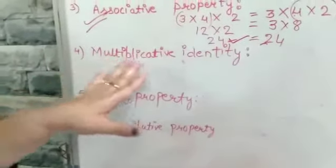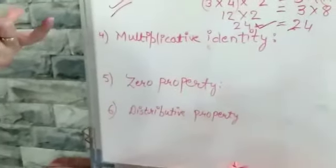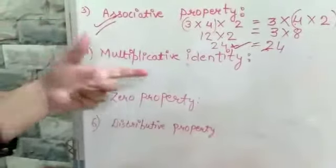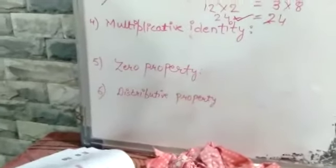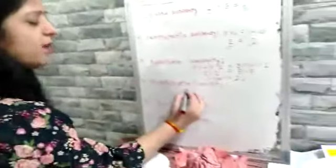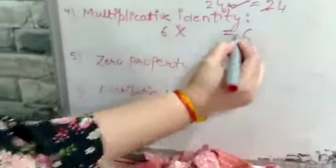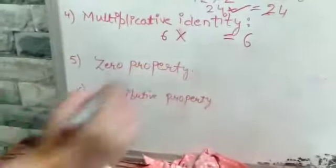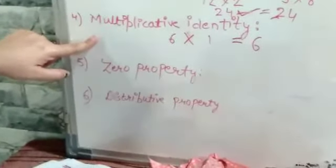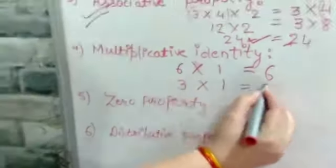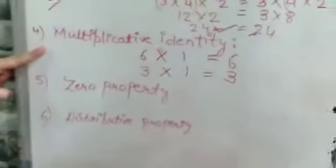The next property is multiplicative identity. In addition, we had additive identity, and in subtraction it was subtractive identity, but in multiplication it becomes multiplicative identity. Remember, in addition the identity element was 0 — additive identity was 0 and subtractive identity was also 0. But with which number should any digit be multiplied so that it remains the same? If I take the example of 6, it should be multiplied with 1 to remain 6. So multiplicative identity is 1. Another example: if 3 is multiplied with 1, it remains 3. This is called multiplicative identity, and multiplicative identity is 1.